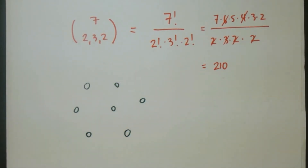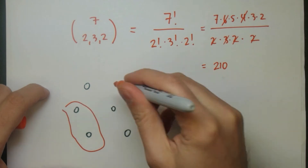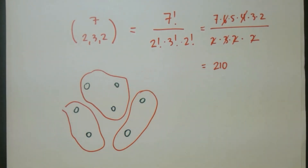Pictorially, what's happening is we're taking our 7 people and trying to split them up into smaller sets, and we found there are 210 different ways of doing this.